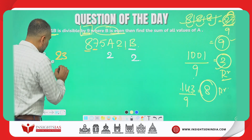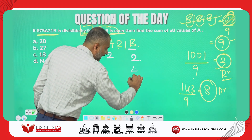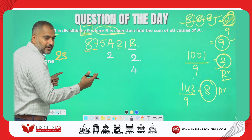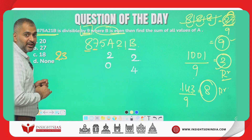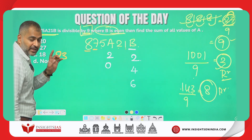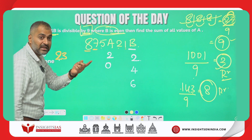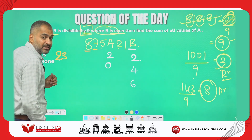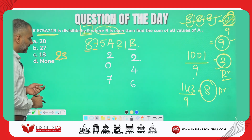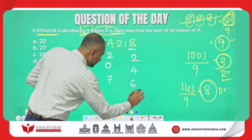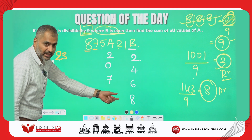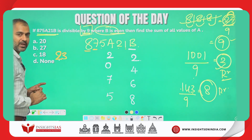If B=4: 23+4=27, already divisible by 9, so A=0. If B=6: 23+6=29, not divisible. The next multiple of 9 is 36, so we need 7 more — A=7. If B=8: 23+8=31, we need 5 more to reach 36 — so A=5.